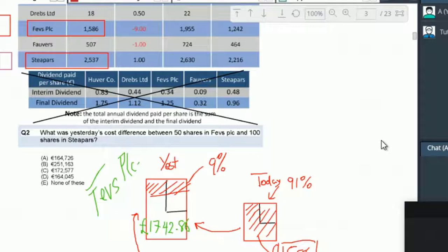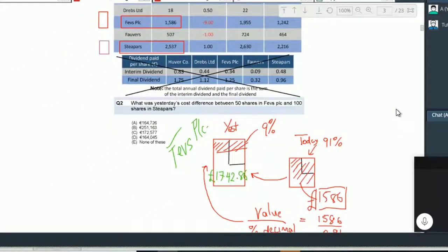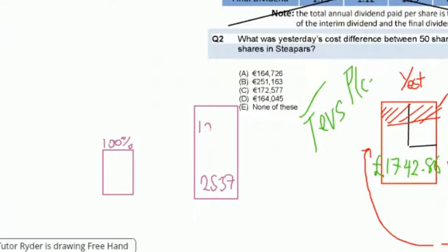So Steepers again, it's the same kind of scenario. Yesterday, it was a smaller amount. And today it's a bigger amount, right? Because it's gone up by 1%. So what do we do? We know the amount today, which is 2,537. We also know the percentage today. Well, this was 100%. We've added on 1%. So this is now 101%. So how do we get back to the previous day?